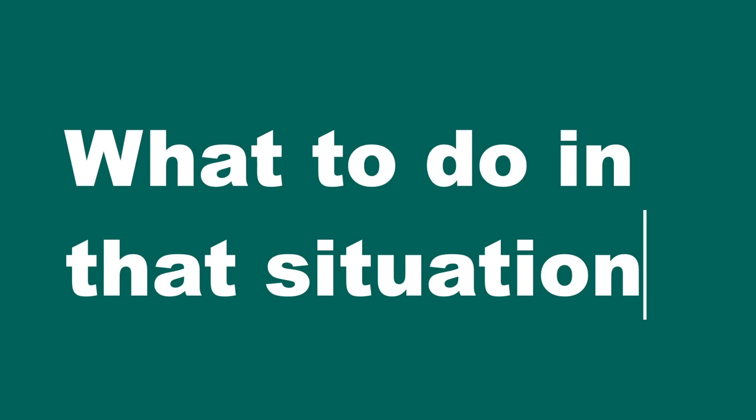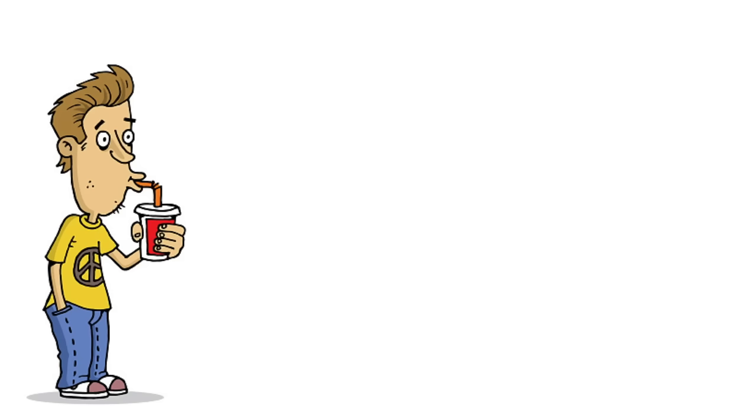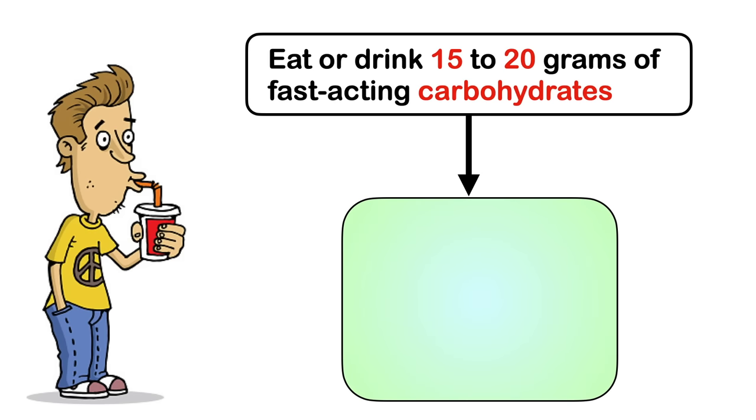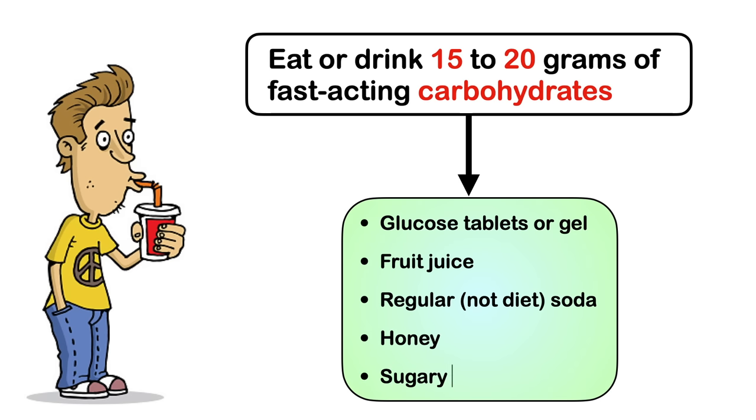Now let's see what to do in that situation. You can eat or drink 15 to 20 grams of fast-acting carbohydrates. These are sugary foods or drinks without protein or fat that are easily converted to sugar in the body. Try glucose tablets or gel, fruit juice, regular soda, honey, or sugar candy.